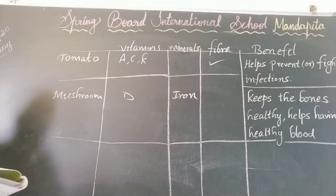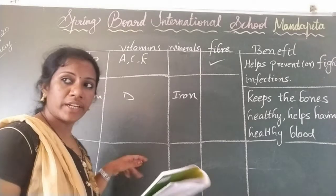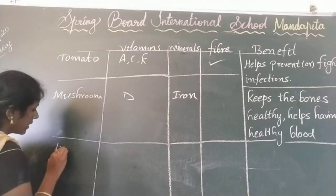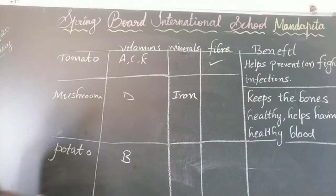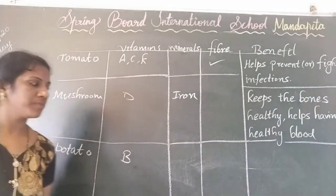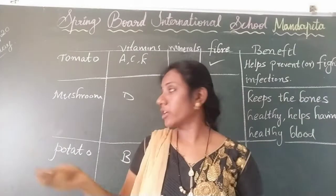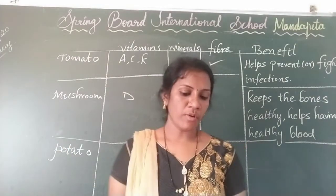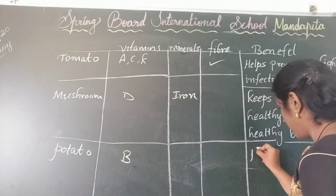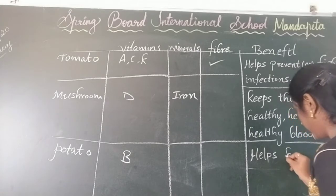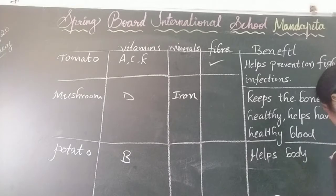Next, we will know potato. Potato has vitamin B. It doesn't have minerals and it doesn't have fiber. So it can produce energy to our body — potato can produce energy to our body.